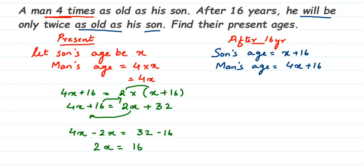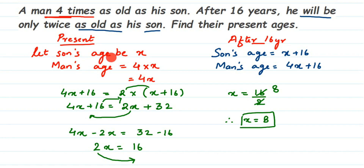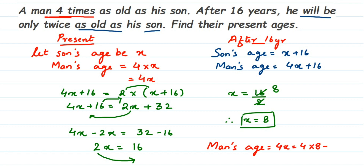So 2x = 16. To find x, we transpose 2 to the other side: x = 16 ÷ 2 = 8. So x = 8. Since x was the son's present age, the son's present age is 8 years. The father's age is 4x = 4 × 8 = 32 years. So the man is 32 years old and his son is 8 years old.